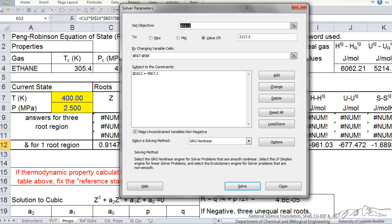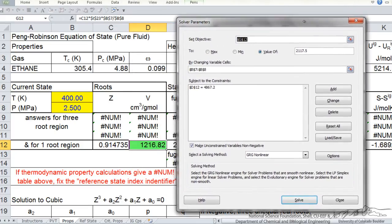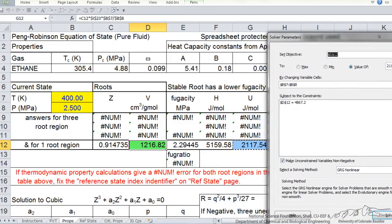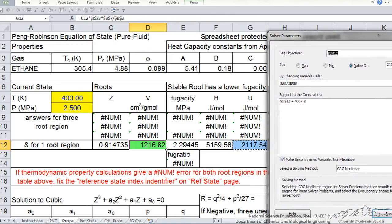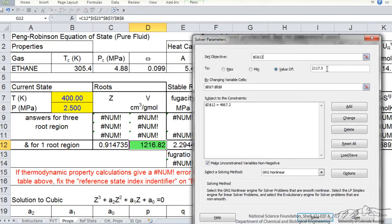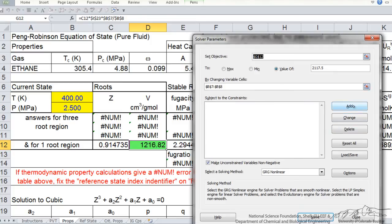And so solver says, first I want to set my objective function, and that is going to be my internal energy value, so that is here. That is what I want to have a value, and I have already typed it in, 2117.5, and now add the constraint.